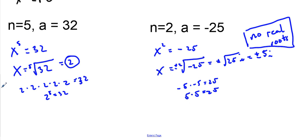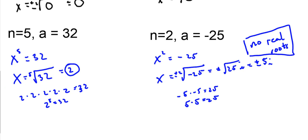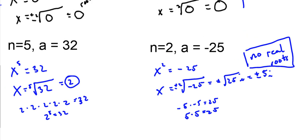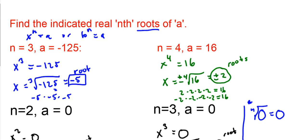That's how you do it. If it asks you to find the indicated roots, we're trying to figure out what x value to the nth power gives us the A value they provide — using inverse operations. Hope this helps you out. Good luck and God bless.